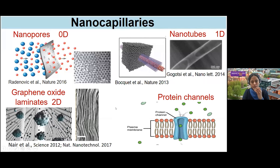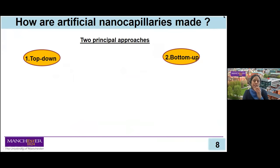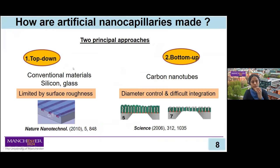But none of these systems even come close to the sophistication of protein channels, which are the classic example of angstrom-scale channels. How are artificial nano-capillaries made in literature? There are principally two approaches: top-down or bottom-up. In the top-down approach, you use conventional lithography to carve materials and create nanochannels — for example, channels made by lithography on silicon or glass. However, we cannot reach very small channel dimensions because surface roughness dominates below two nanometers.